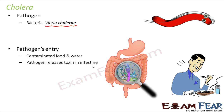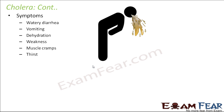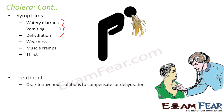Vibrio cholerae releases poisonous substances inside the intestine. The symptoms of cholera are watery diarrhea — loose motions — vomiting, dehydration, weakness, muscle cramps, and thirst. The first three symptoms are all related to digestion. When food is not getting digested properly, you have loose motions. With vomiting, a lot of water also leaves the body, causing dehydration — a lack of water inside the body.